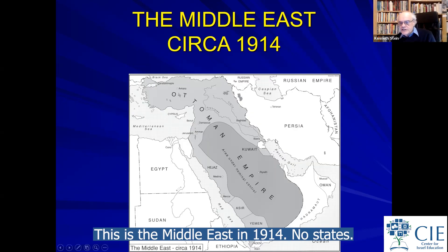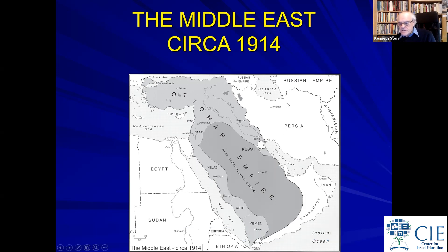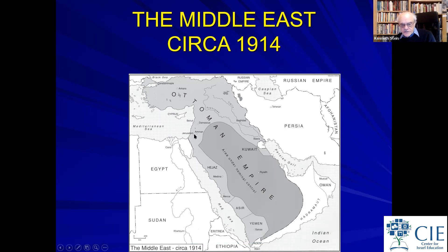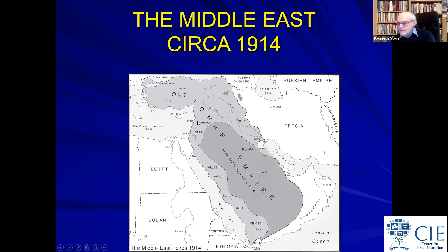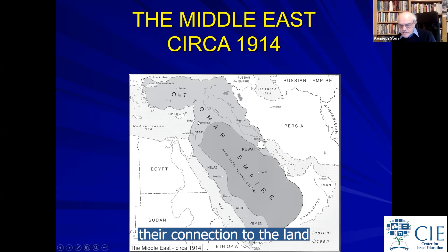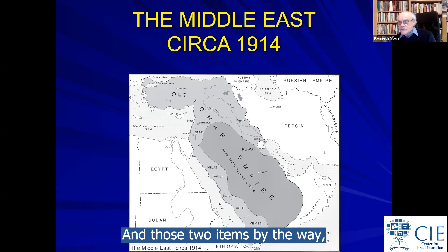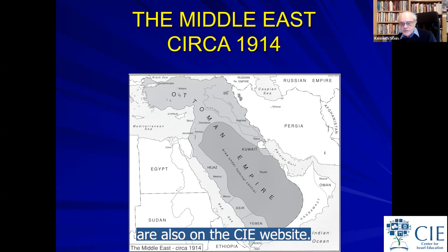This is the Middle East in 1914 — no states, except two ancient states: Iran/Persia and Egypt. And Jews could claim their connection to the land comes out of their daily prayer and out of the covenants. Those two items — Zion mentioned in daily prayer and the covenants — are also on the CIE website.